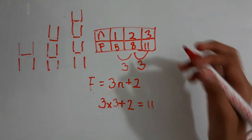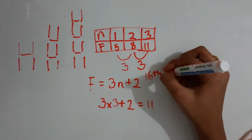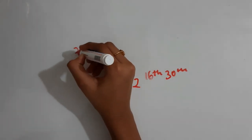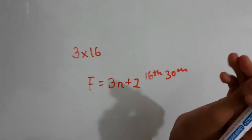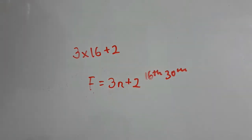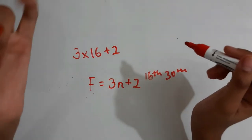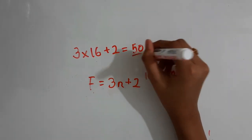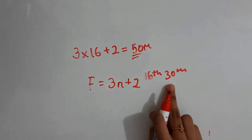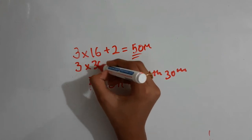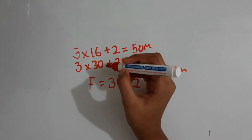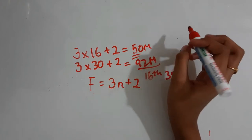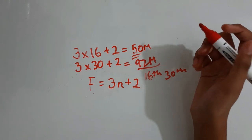Now we can check for the 16th and 30th figures. For the 16th: 3 × 16 + 2 = 48 + 2 = 50 matchsticks. For the 30th: 3 × 30 + 2 = 90 + 2 = 92 matchsticks. So we have finished the first problem.